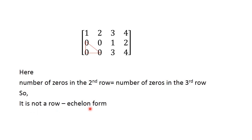So it is not a row echelon form because the third condition requires the number of zeros in the last row to be greater than the number of zeros in the previous row. To reduce this matrix into row echelon form, we use elementary row operations to change the third row third element to zero.